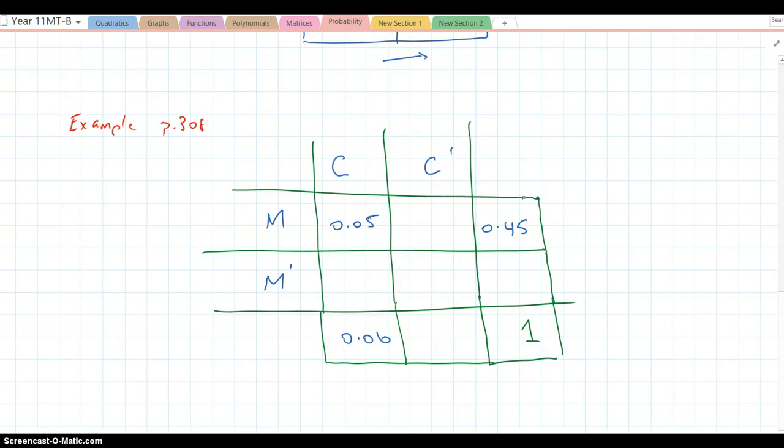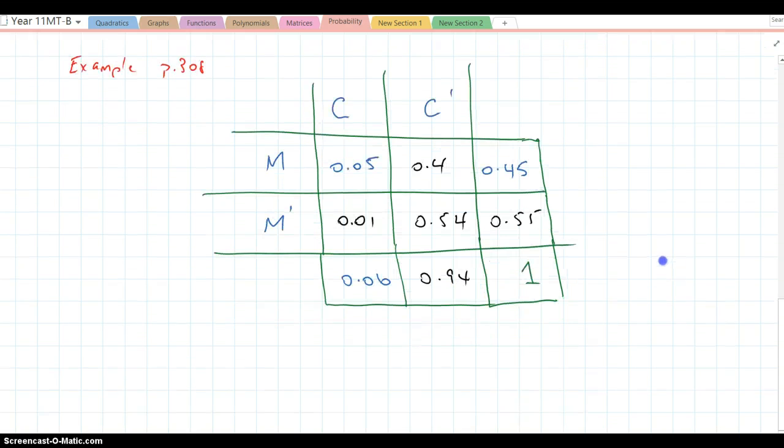Okay, go and fill out the rest of the square. I'm going to do it in a different color. So this will be 0.01 because they've got to sum to that. This will be 0.4, this will be 0.94, and 0.55 there. Wait, that's wrong—0.54, I'm sorry. 0.4 and 0.54 gets us 0.94. And there's our Karnaugh table filled out.